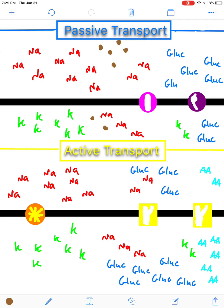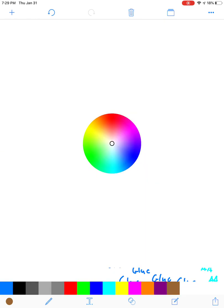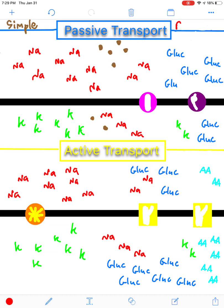There is simple diffusion, and there is also facilitated diffusion. Now, the difference being whether or not transport proteins are required. And for facilitated diffusion, you need transport proteins. And the transport proteins are shown in purple, the light purple and the dark purple.